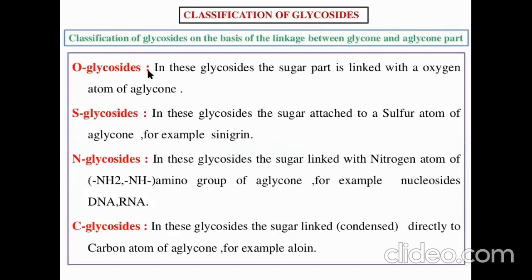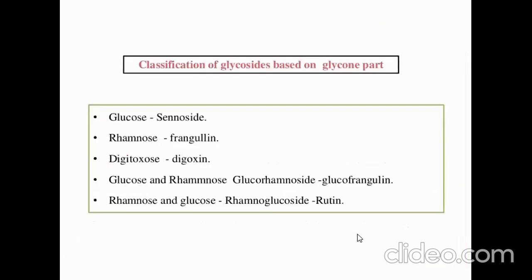Classification of glycosides based on the linkage between the glycon and aglycon part: O-glycosides, where the sugar is linked with the oxygen atom of the aglycon; S-glycosides (sulfur glycosides), where the sugar is attached to the sulfur atom of the aglycon, e.g., sinigrin; N-glycosides (nitrogen), where the sugar is linked with the nitrogen atom of the amino group of the aglycon, e.g., nucleosides, DNA, RNA; and C-glycosides, where the sugar is linked directly to the carbon atom of the aglycon, e.g., aloin.